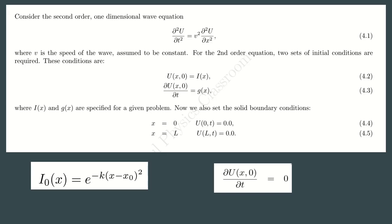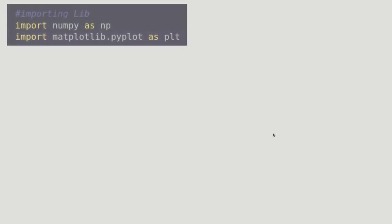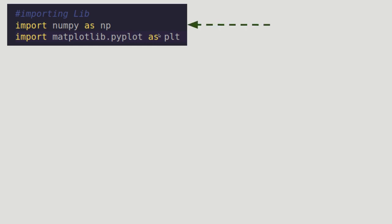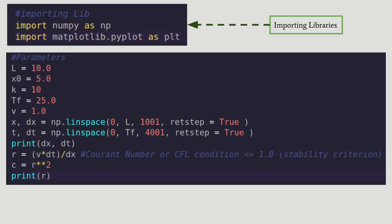Now we study the anatomy of the program. First you have to import all necessary libraries: NumPy as np for array operations, and matplotlib.pyplot as plt. Then define the parameters: L = 10 units, x₀ = 5 units, k = 10, final time T_f = 25 units, and velocity v = 1 unit.